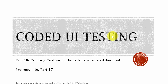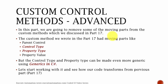Hey hello guys, this is Karthik from exitautomation.com. This is part 18 of our Coded UI video series. In this part we're going to start creating the custom method which we discussed in part 17, and we're going to take it to the next level by creating even more advanced generic methods so that you can use that method for any type of control. Before watching this part, I would request you to watch part 17, because this is a complete continuation of it.